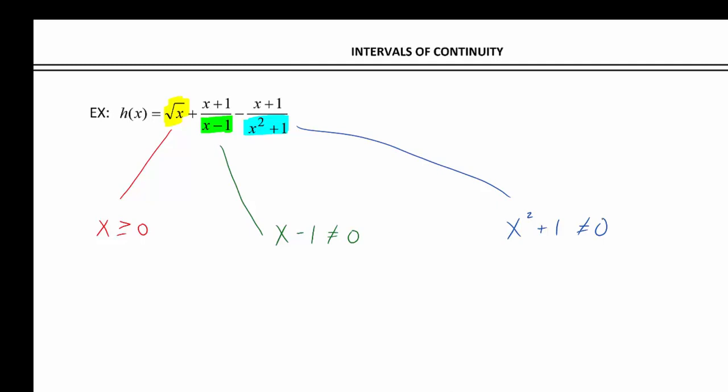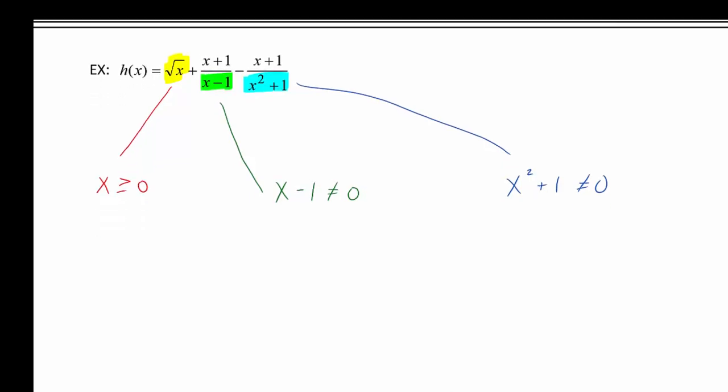So let's deal with each of those things, and then we'll put it into one cohesive thought. All right. Well, this first one solved for us, x has to be greater than or equal to zero. For the next one, we get that x can't be equal to positive one. And then solving this third one.